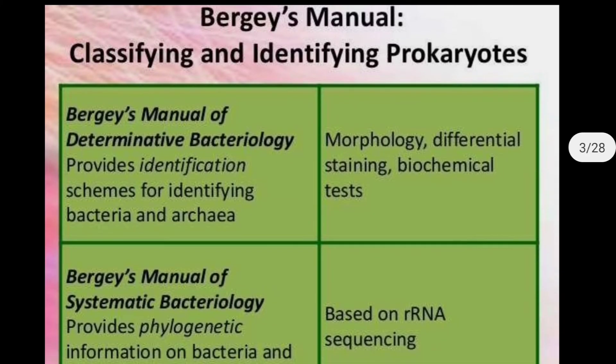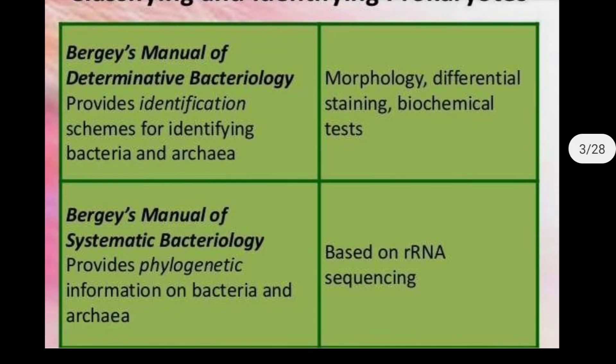The difference between Bergey's Manual of Determinative Bacteriology and Bergey's Manual of Systematic Bacteriology: Determinative Bacteriology consists of an identification scheme for identifying bacteria and archaea. It includes morphological characters and differential staining, which helps identify a particular bacterium by its morphology, differential staining, and biochemical tests.